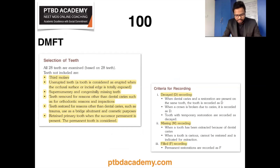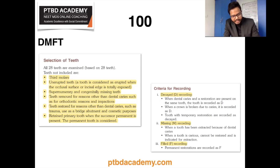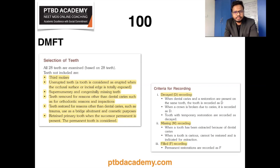Moving to the DMFT index, developed by Klein, Palmer, and Knutson in 1938. D stands for decayed, M for missing, and F for filled. All 28 teeth are examined with specific exclusions. Rules for scoring: no tooth should be counted more than once; decayed, missing, and filled are recorded separately; teeth lost or filled for reasons other than caries are not included; deciduous teeth are not considered; a tooth with both decay and a filling is counted as one tooth. Criteria for identifying dental caries: the lesion must be clinically visible and obvious, with discoloration or loss of translucency typical of undermined or demineralized enamel, or a definite catch where the explorer tip can penetrate soft, yielding material.